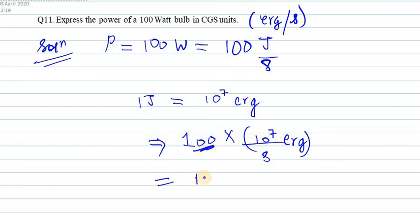Here we have 10 raised to power 7, so we can get the value as 10 raised to power 9 erg over seconds. So this is the power of the bulb in CGS units. Thank you for watching this video.